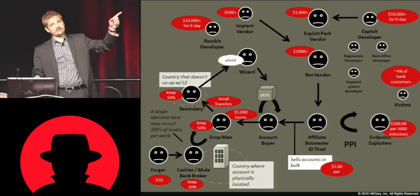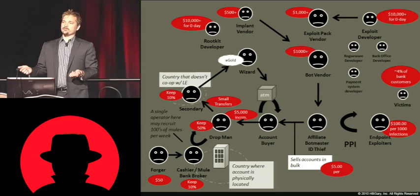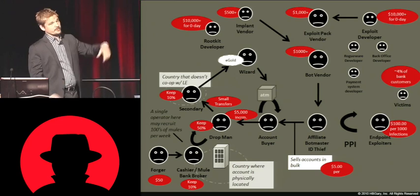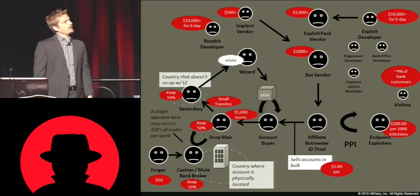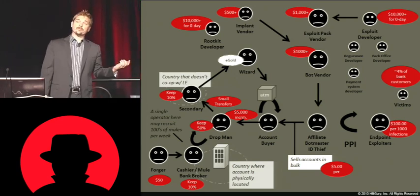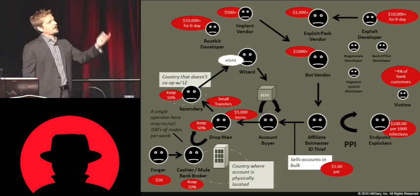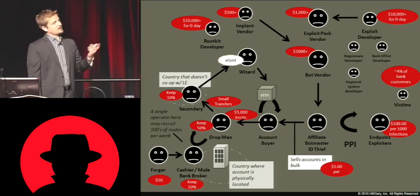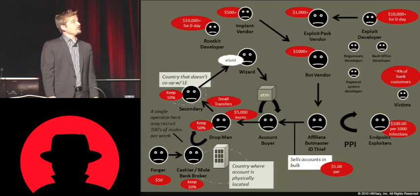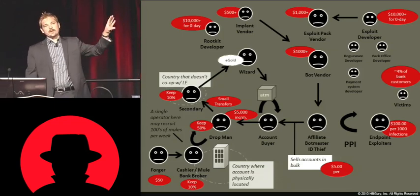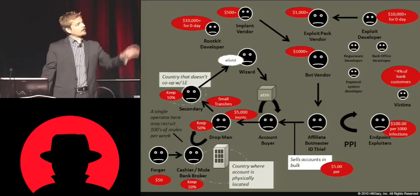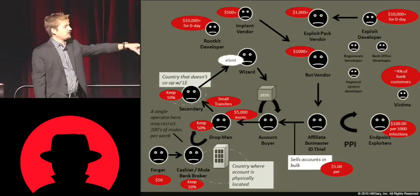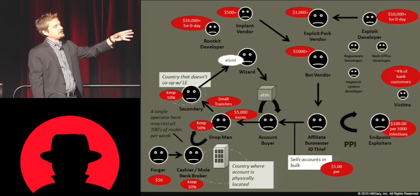Implants are sold in forums and on auction sites for well over $500 a package. The bot vendor buys those and uses them to deploy botnets, which are bought and sold daily — a whole new marketplace in access. The exploit pack vendor — some of you may have heard of Eleonora Pack — these sell for over $1,000. I will actually buy them myself, pretending to be someone I'm not, to see what their capabilities are. Because these guys are nefarious, a lot of times they'll pirate them and give them away, so you can find a lot of this in open source. Even the forger in the corner makes fake IDs for $50 each — everybody's making money on the scheme. There's so much PII being stolen that the affiliate ID thief sells it by the megabyte.